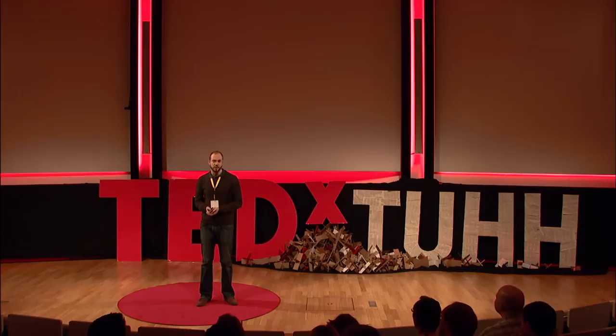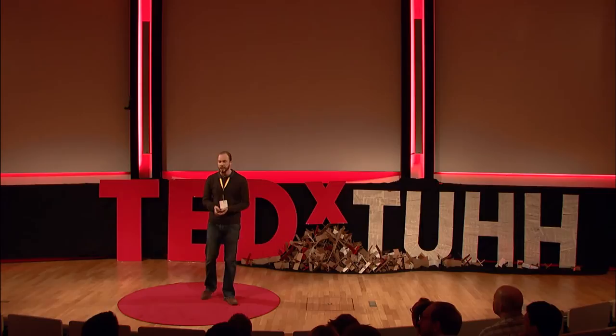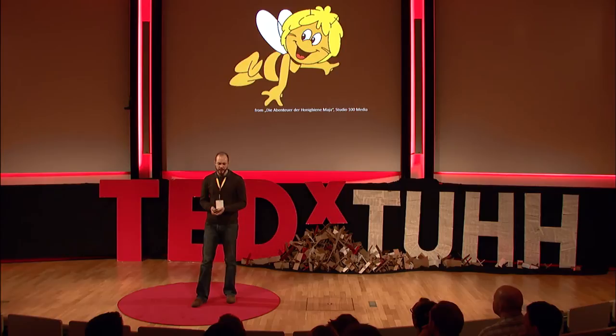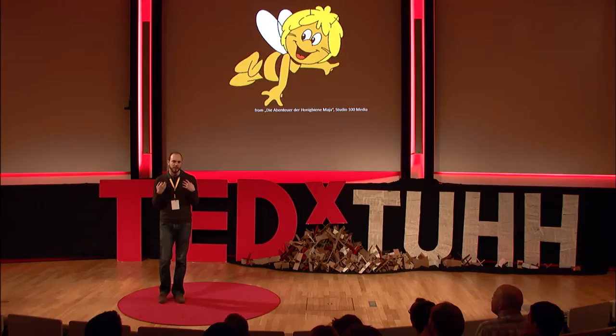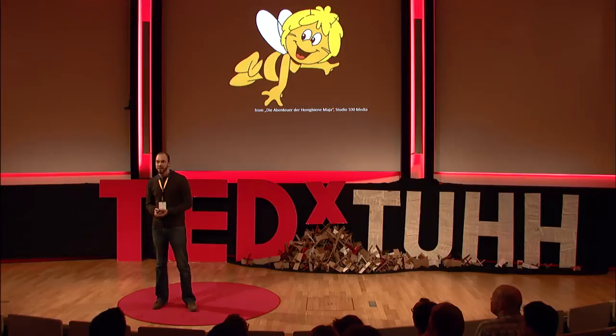Let's start with the insect everybody likes, and that is the honeybee. Honeybees produce honey, they fertilize our plants, and they sting only if threatened to be squeezed or the hive is threatened. So we even learn that as children. And with Maya the Bee, I want to explain what the problem is that we learn that as children, because when we make a children's book, we make things comparable to us. And there are a lot of problems with this picture of the bee.